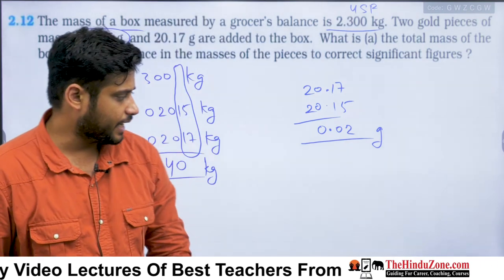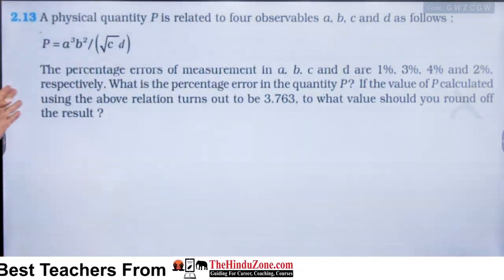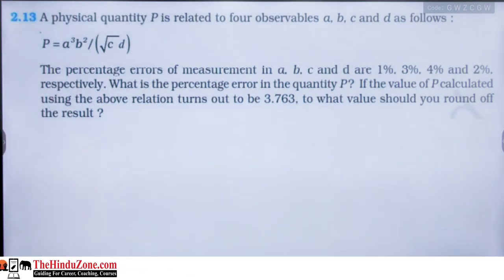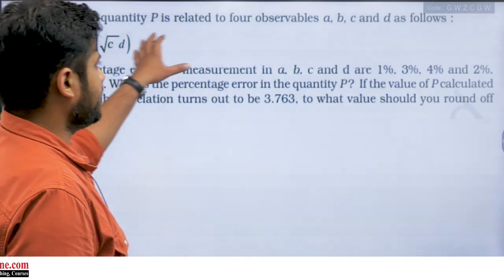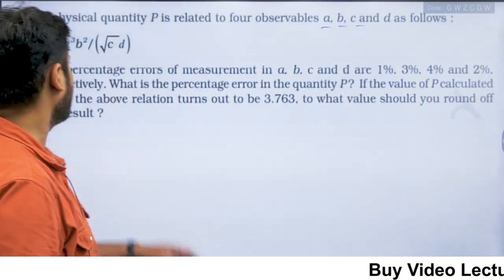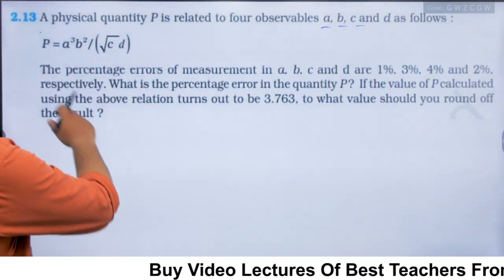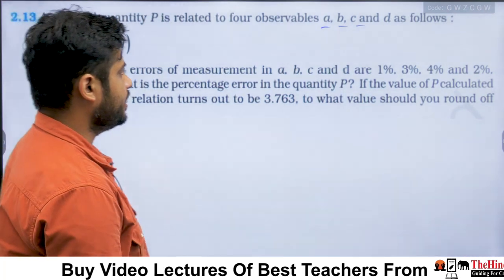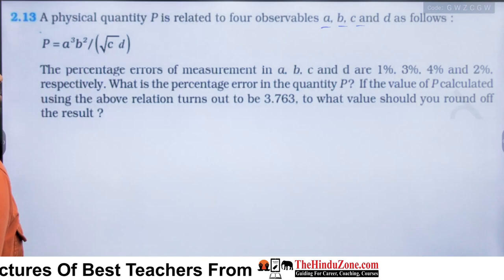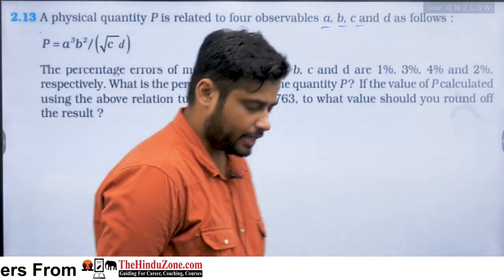Let us move on to the next question. A physical quantity P is related to four observables A, B, C, and D. The percentage errors of measurement in A, B, C, and D are 1%, 2%, 3%, and 2% respectively. We need to find the percentage error in the quantity P.